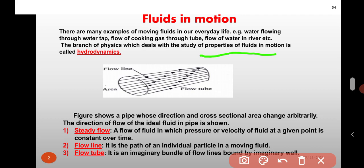First point is a steady flow. Steady flow means a flow of a liquid in which pressure or velocity of a fluid at a given point is constant over time.